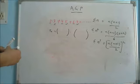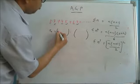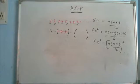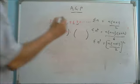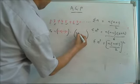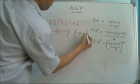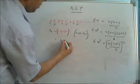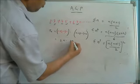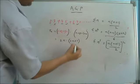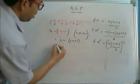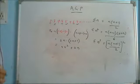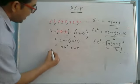The nth term of the first AP is 2 + (n−1)×2, which is a + (n−1)d. And the nth term of the second AP is 3 + (n−1)×2. So the product is going to be 2n × (2n+1). On simplifying, it gives you 4n² + 2n. Once we got Tₙ, we can find Sₙ easily.